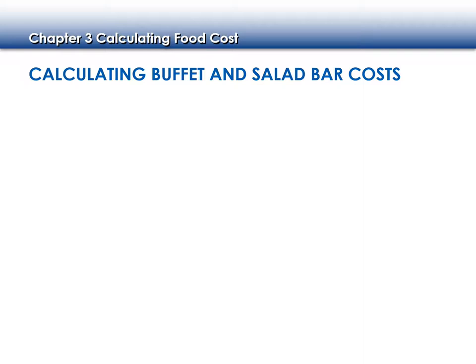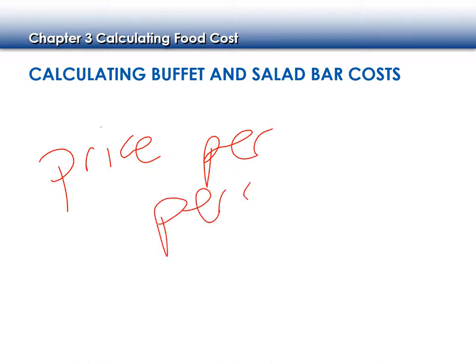Sometimes we have buffets instead of actual plated meals, so how do we figure out what that cost is? You have to figure out what you're going to charge, but you also need to figure out what it's going to cost you. Often when we do salad bars and buffets, we use a price per person — or cost per person.